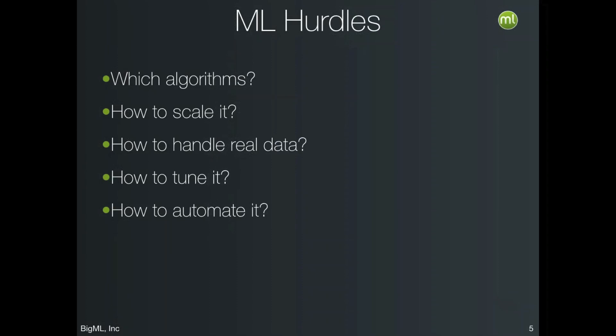The most important question is how will you automate all of those choices? This last point about automation is really important, because the value of your data is often time-sensitive. For example, if you're collecting data on user behavior, it's not going to be as useful six months from now as it is in the next five minutes — imagine if you're trying to predict if somebody is about to leave your website.